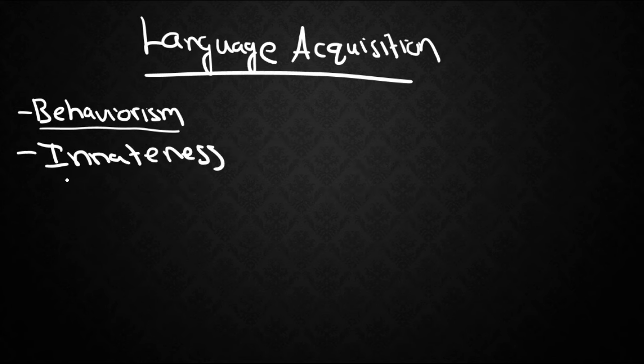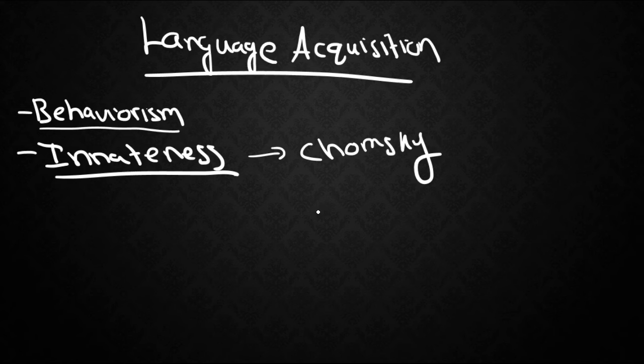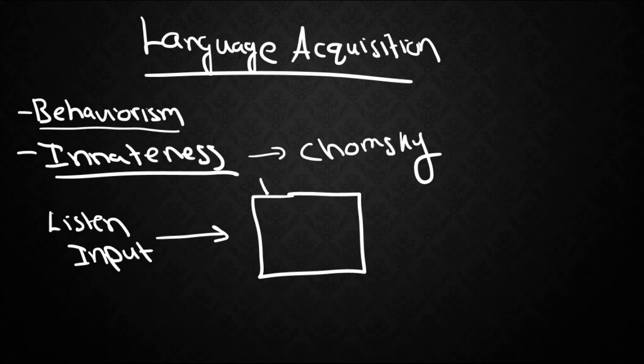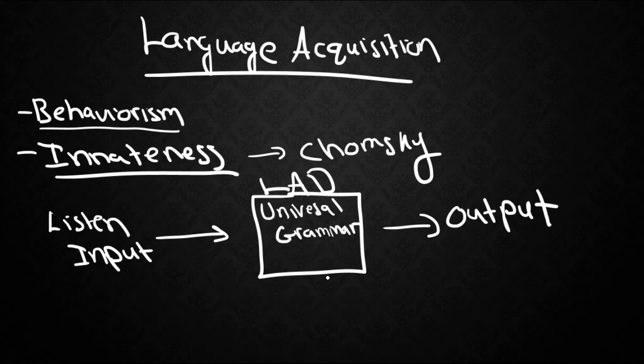The next theory was the innateness theory. Noam Chomsky is the leading figure in the innateness theory. Basically this theory suggests that we do not imitate or copy what our parents say. Actually, we just listen for input of our language. This input is filtered inside our brain in a device called the language acquisition device or LAD for short. Then we come out with the output which is our language. Inside this language acquisition device is something we call universal grammar along with strategies for acquiring languages.